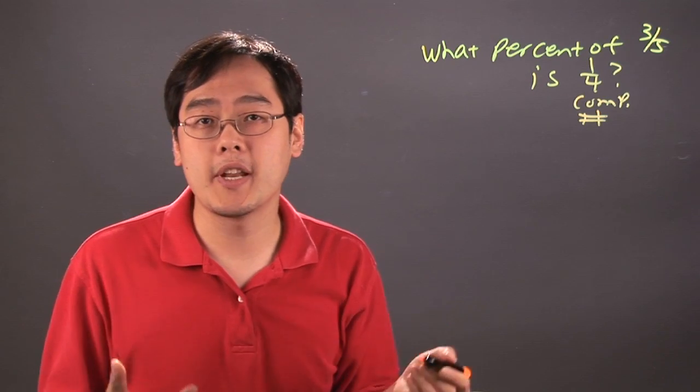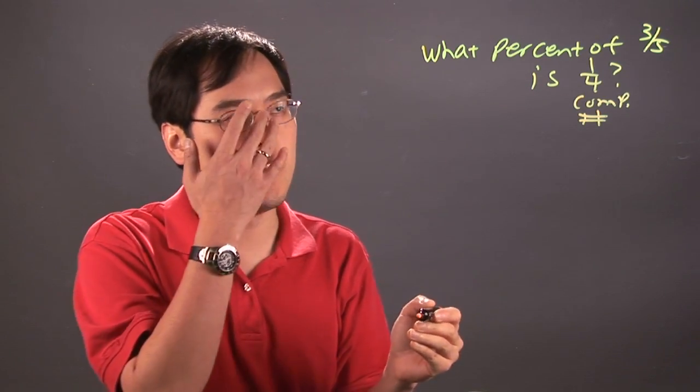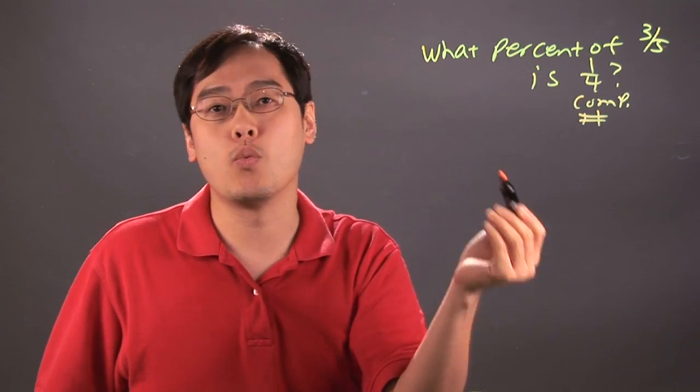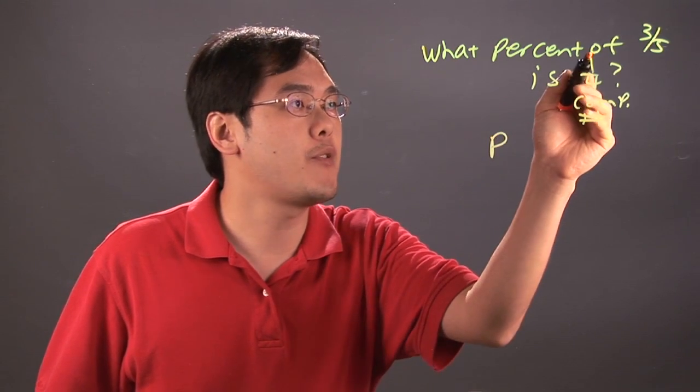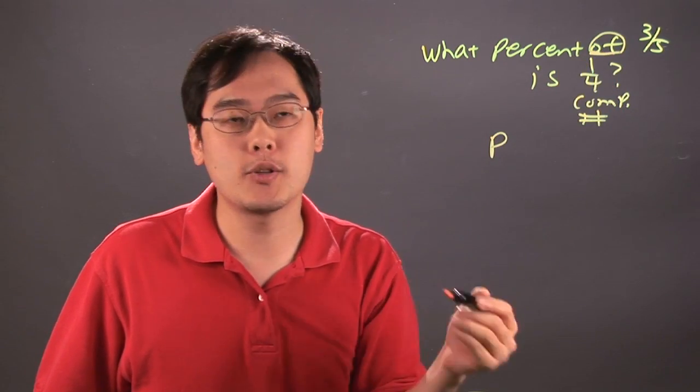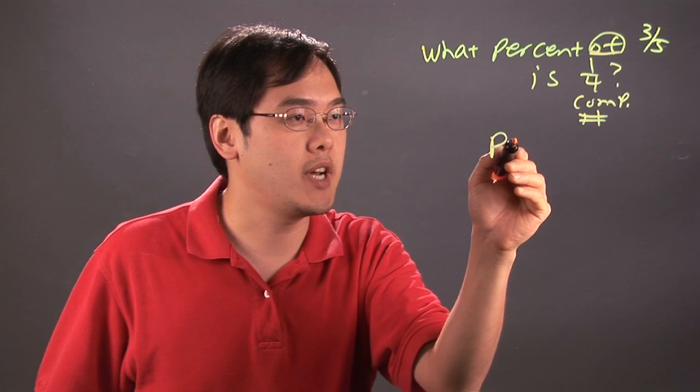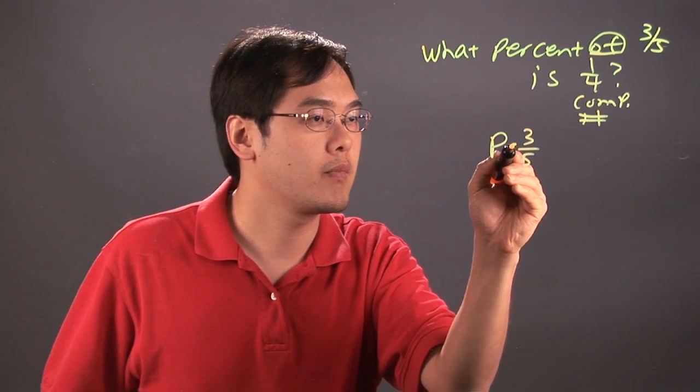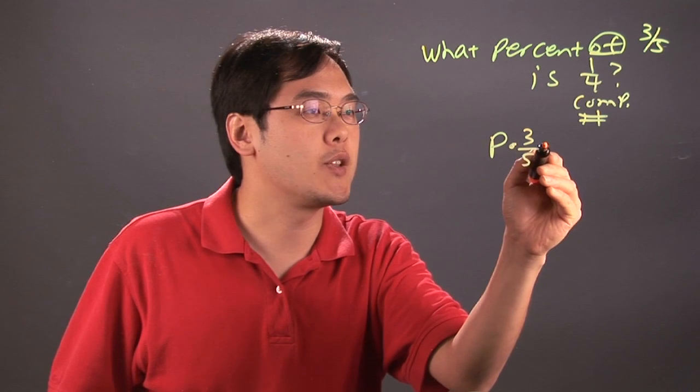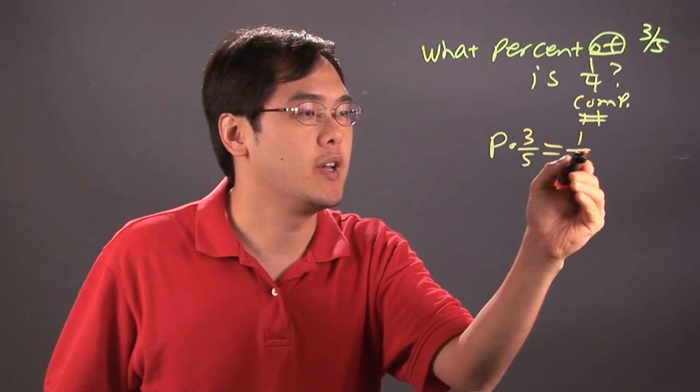So what you want to do is set it up as an equation. Now what percent we don't really know, so let's just call it p for percent, of three-fifths. This means you have to multiply, so p times three-fifths is, that's another way of saying equal sign, that's going to be one-quarter.